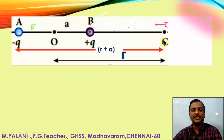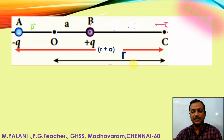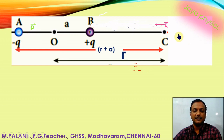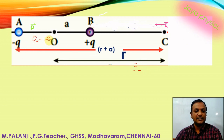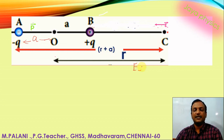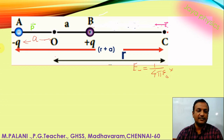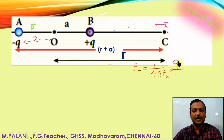Next, I will find the electric field at C due to minus q. I will call it E minus. The distance from minus q at point A to point C is r plus a. So E minus equals 1 by 4πε₀ into q divided by (r plus a) whole square. Since it is a negative charge, the field is directed inward, toward the charge, in the negative x-direction.